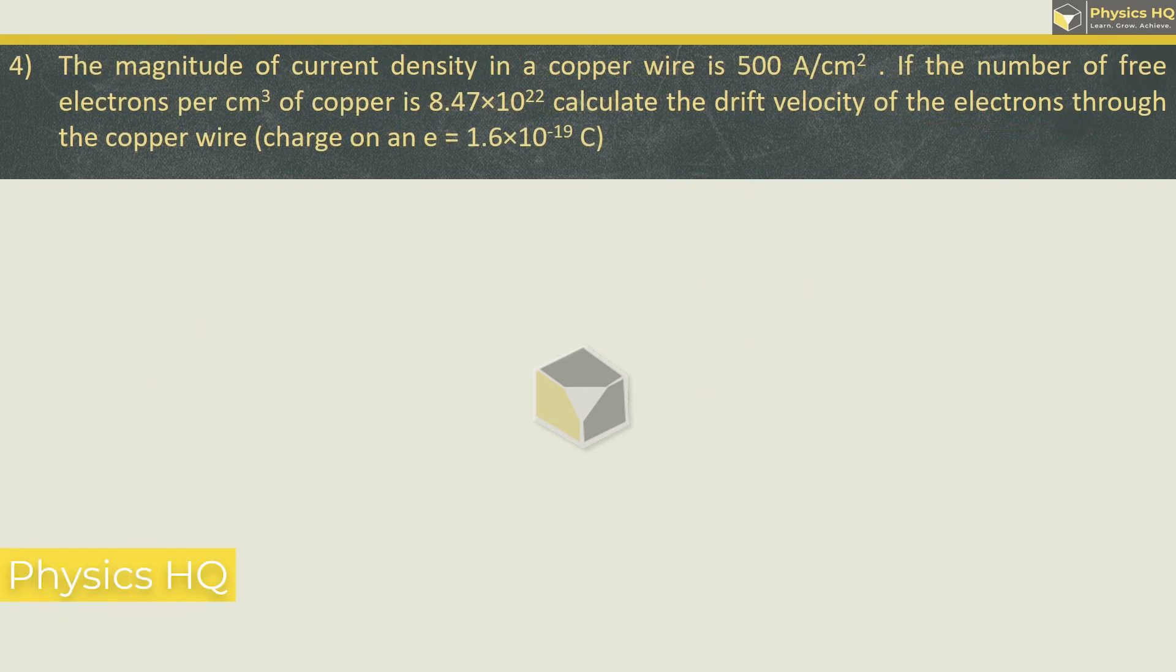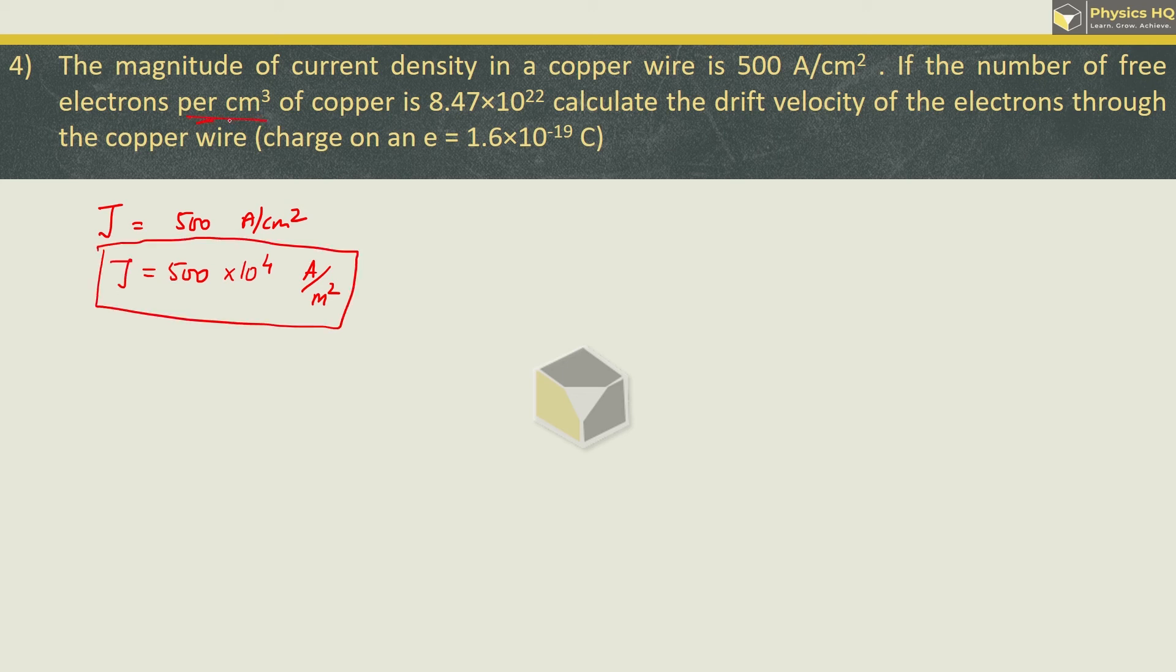The magnitude of current density in a copper wire is 500 ampere per centimeter square. Now current density is denoted by J. This is given as 500 ampere per centimeter square. Converting to meter, this becomes 10 raise to 4 ampere per meter square. Centimeter to meter is 10 raise to minus 2, squared is minus 4. Denominator to numerator becomes plus 4. Next they have given number of free electrons per centimeter cube is n equal to 8.47 into 10 raise to 22 electrons per centimeter cube. Converting to meter, centimeter to meter 10 raise to minus 2, cube is 10 raise to minus 6. This is in denominator. So we will have 8.47 into 10 raise to 22 plus 6 is 28 electrons per meter cube.